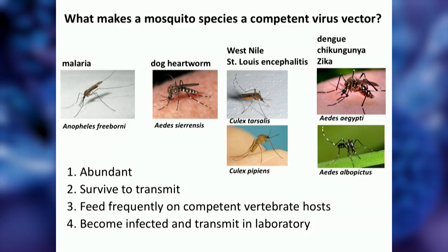There are hundreds of different mosquito species worldwide, and while they look very similar to the naked eye, they are very different and not all are capable of transmitting human and animal pathogens. There are four criteria a mosquito species must fulfill to be considered a competent vector: they must be abundant; they must survive long enough to transmit; they must feed frequently on competent vertebrate hosts — criteria established through field entomological surveys; and fourth, demonstrated in a laboratory setting that the species is capable of transmitting the virus.